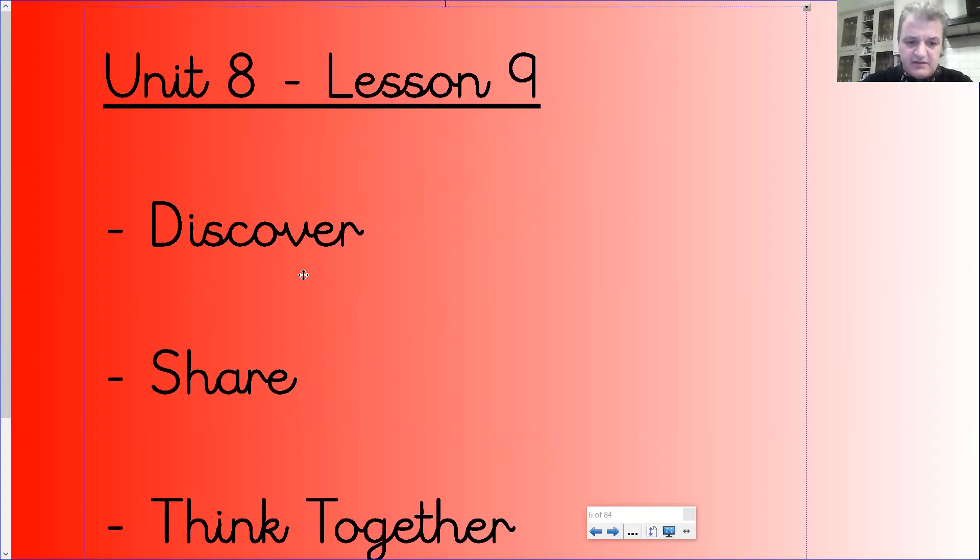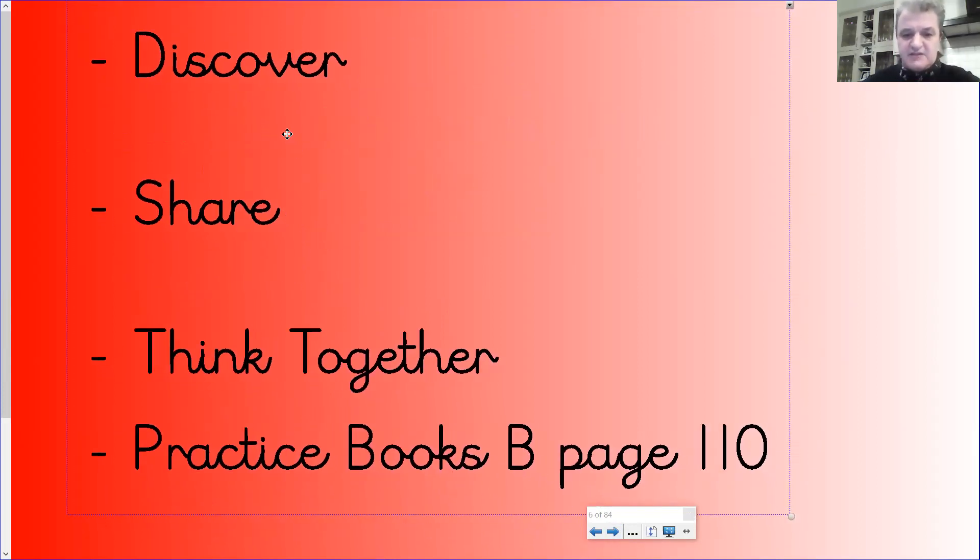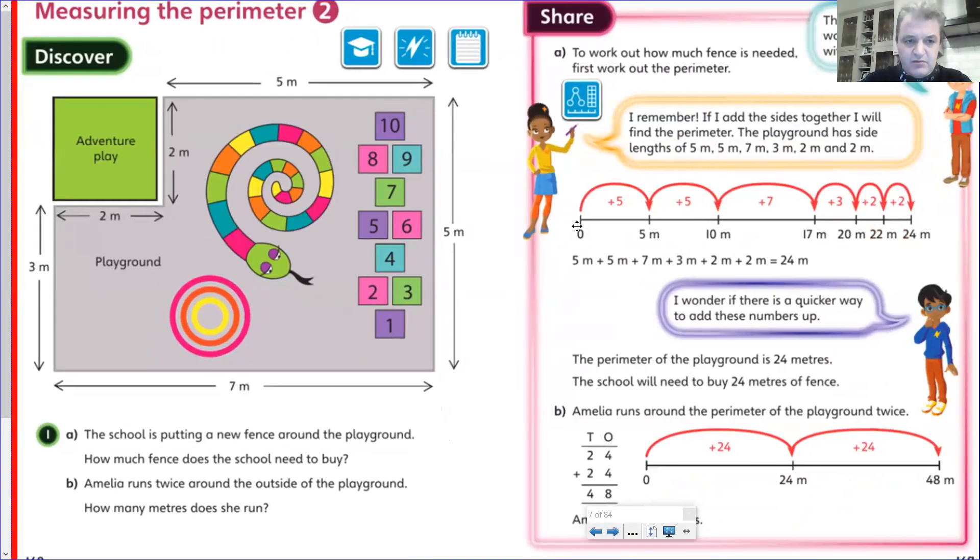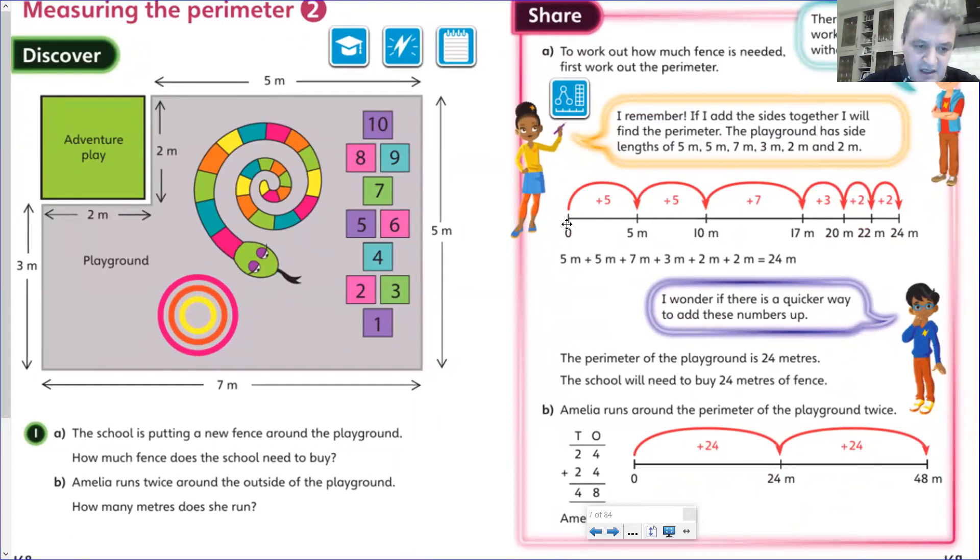So unit 8, lesson 9: discover, share, think together. Then we'll also be looking at practice book page 110. That's where you'll find questions. So this is what we've got. The school is putting a new fence around the playground. How much fence does the school need to buy? Here we've got the playground with nice activities obviously drawn on to the floor, hopscotch there.